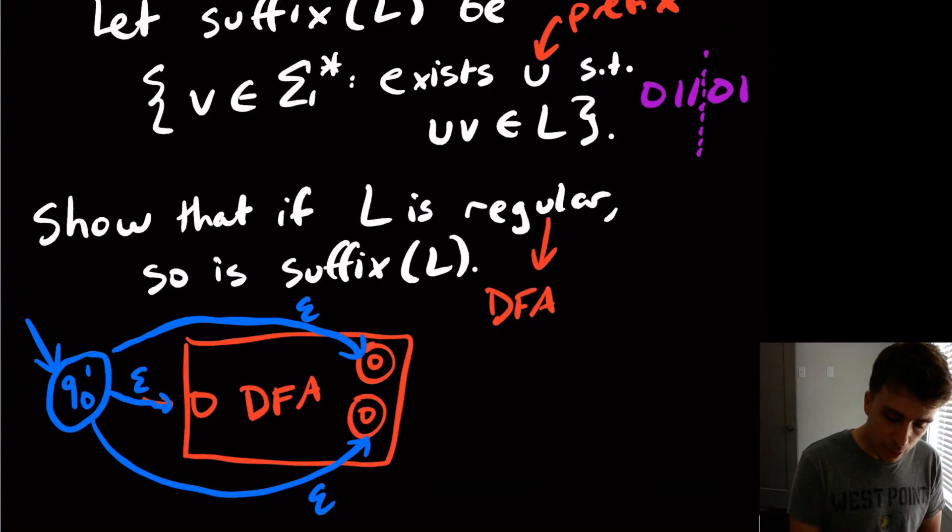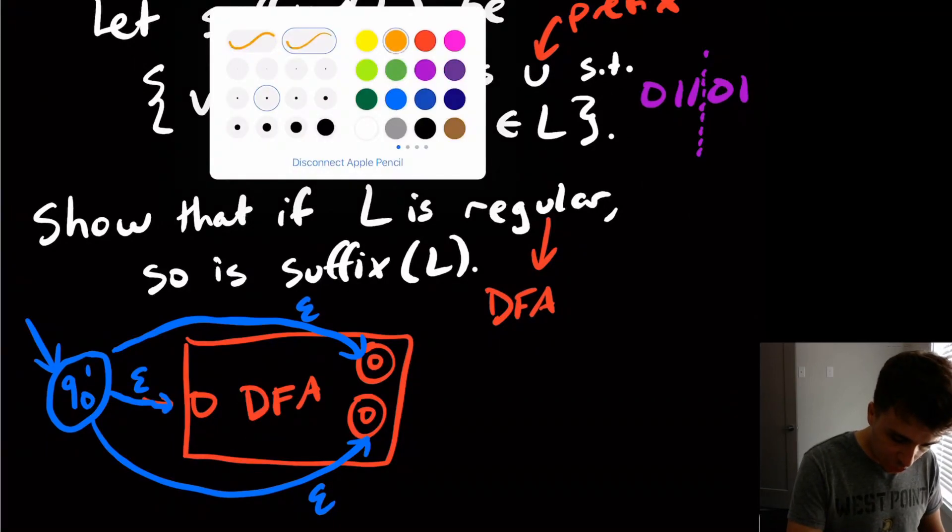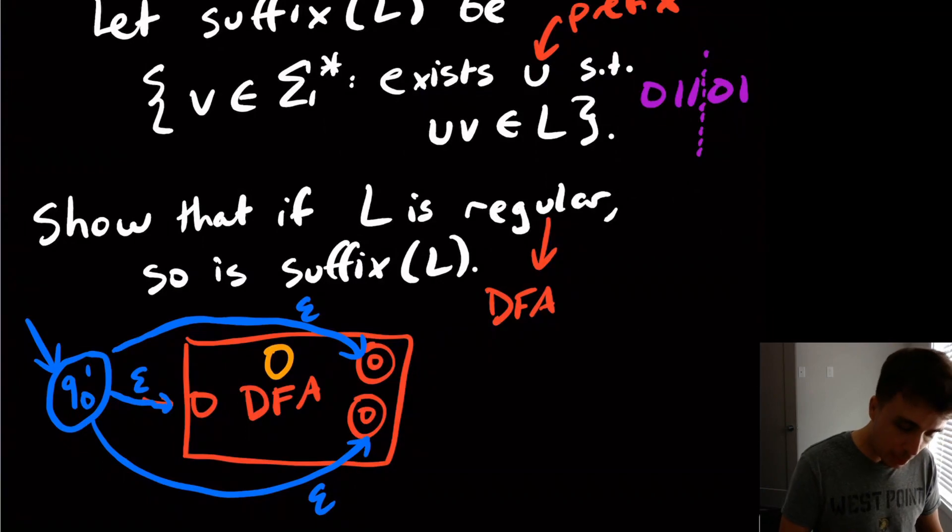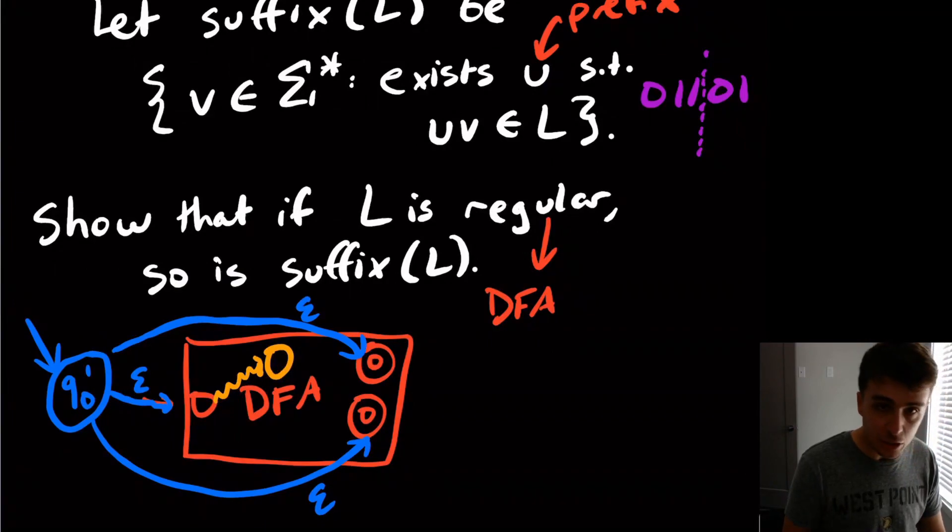But consider otherwise. If we're going to make some kind of skip right here from this state to some other random state in here, then that means that if we look at some state, let's just say right here, this middle state right here, there is some way to get from the original start state to here and then over to here to a final state, let's say. So there is some set of transitions that we read to get from here to here. Let's just imagine a string of the form u v right here.